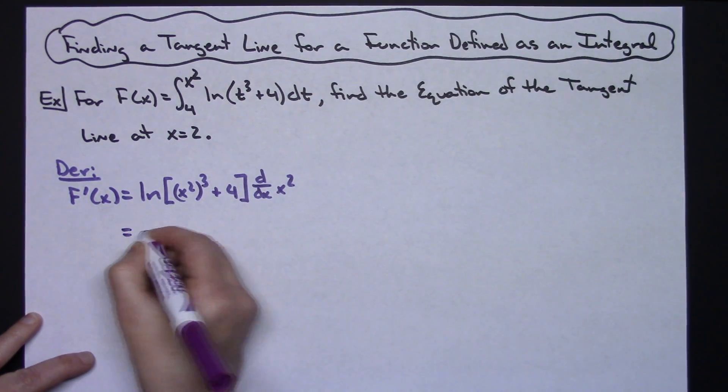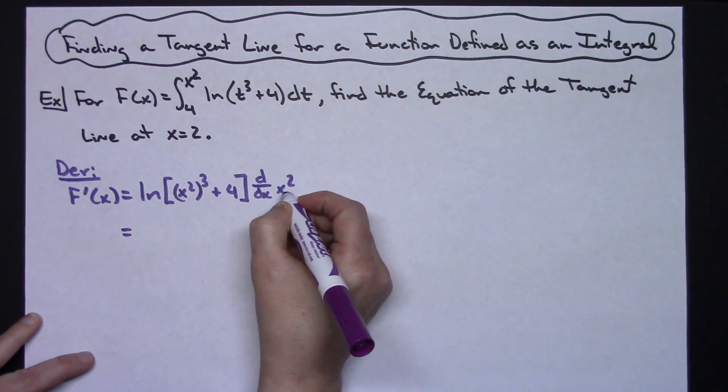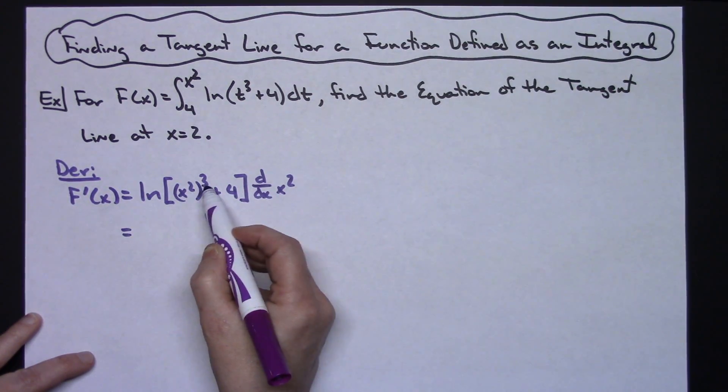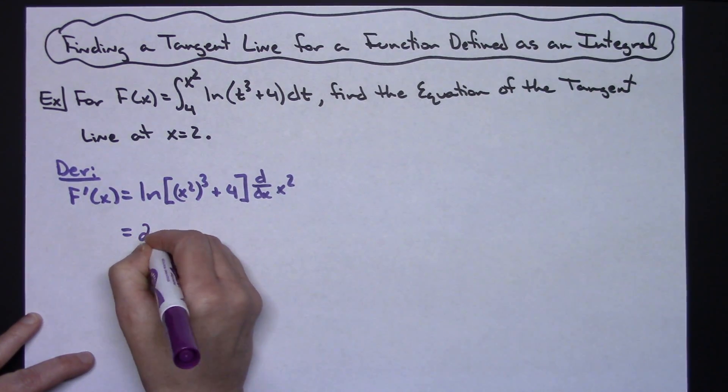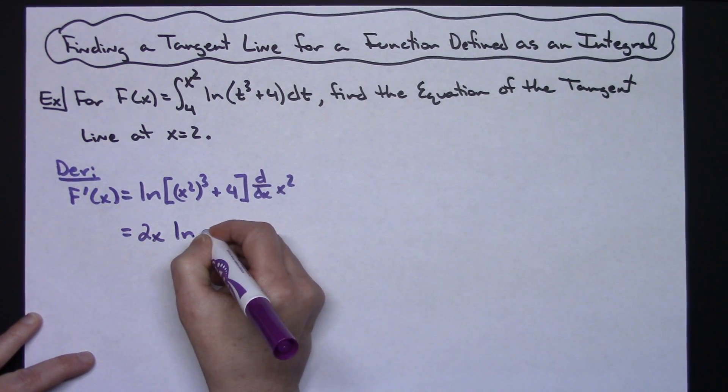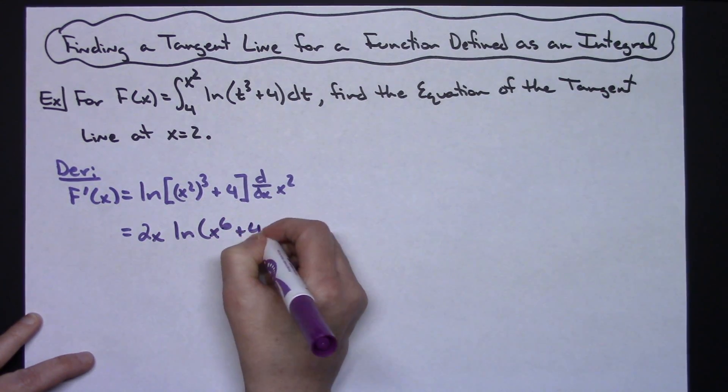Now let's do a little bit of simplifying here. The derivative is going to be a 2x, which I'm going to pull in front. Power raised to a power, I'm going to multiply it, so my 2x is going to come in front and then I'm going to have the natural log of x to the sixth plus 4.